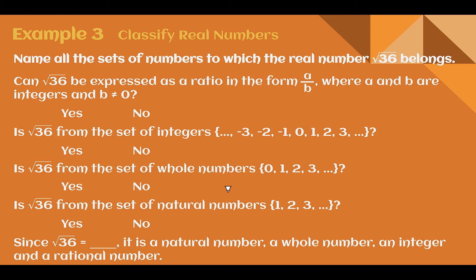Example 3: Name all the sets to which the square root of 36 belongs. The square root of 36 is 6, and since there's no plus or minus sign, we take the positive principal root. Can it be written as a fraction? Yes — 6 over 1. Is 6 an integer? Yes. Is it a whole number? Yes. Is it a natural number? It's a positive counting number, so yes. Therefore, the square root of 36 is a natural number, a whole number, an integer, and a rational number.